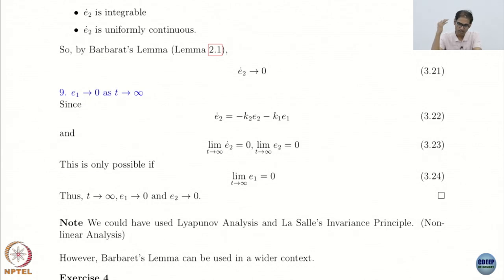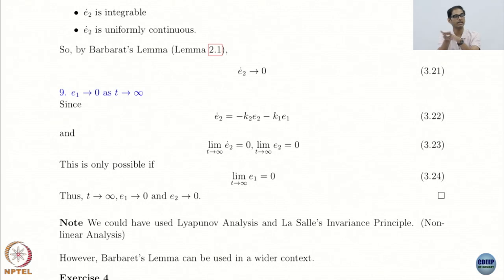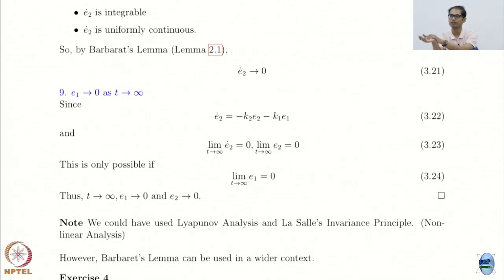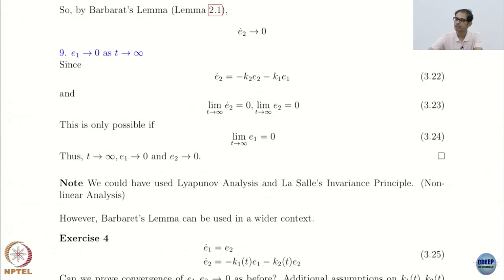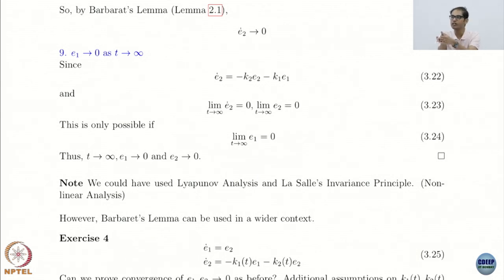The logic is similar to LaSalle invariance: with LaSalle you would look at the set where V_dot = 0, which is where E2 = 0, then find the largest invariant set inside that — concluding E2_dot = 0 forces E1 = 0. The approach here is slightly different, using notions of integrability, Lp/L∞ spaces, and uniform continuity. Actually, this is easier to implement despite the longer-looking steps. Many people get confused with LaSalle invariance but not with signal chasing.